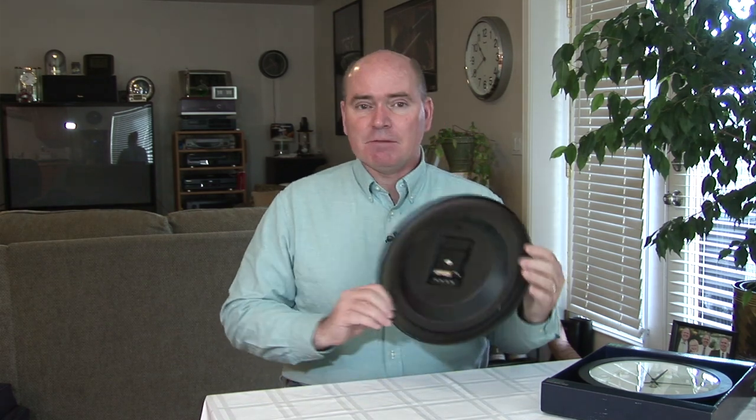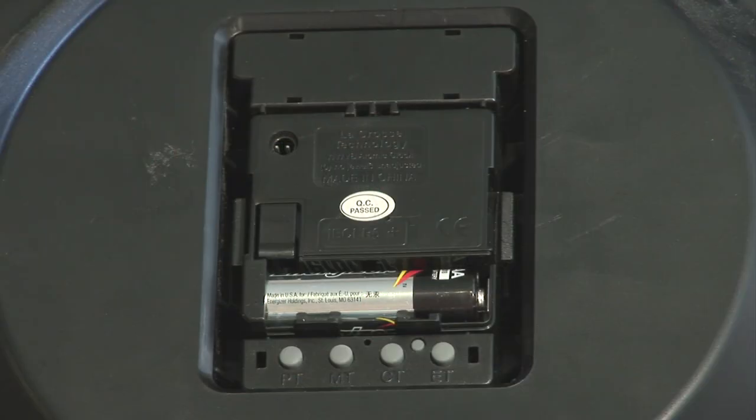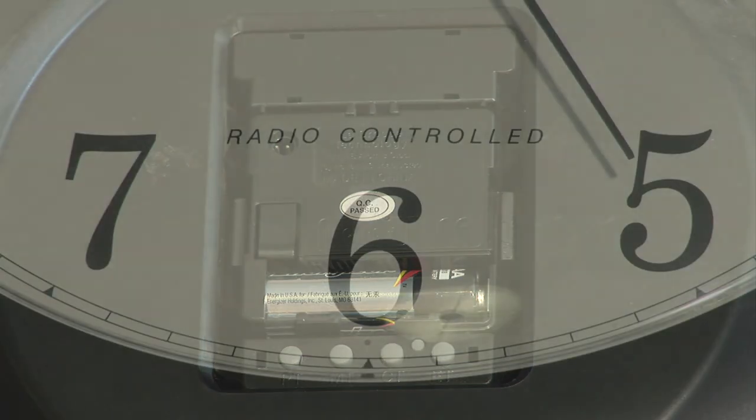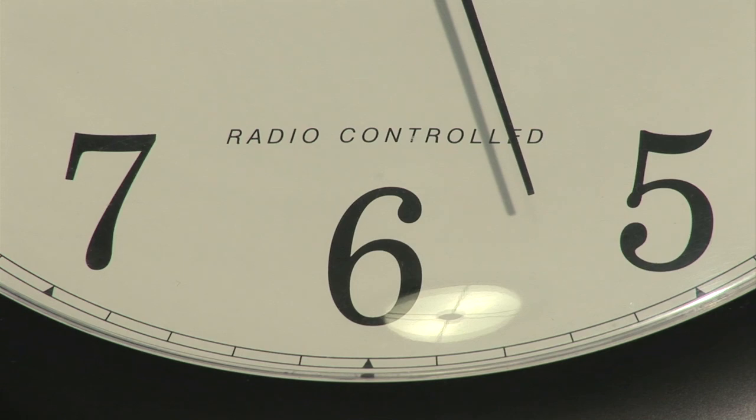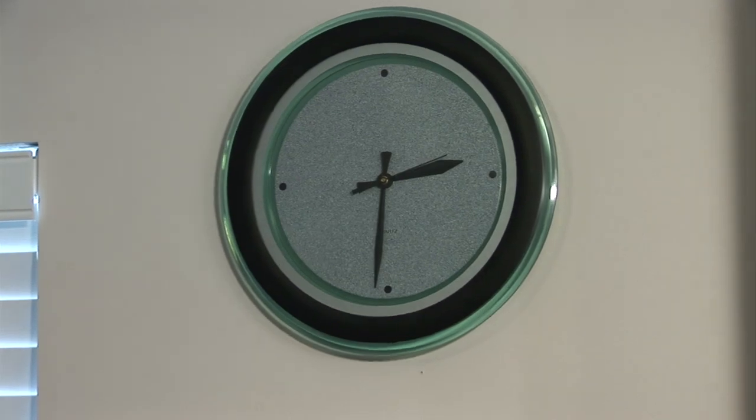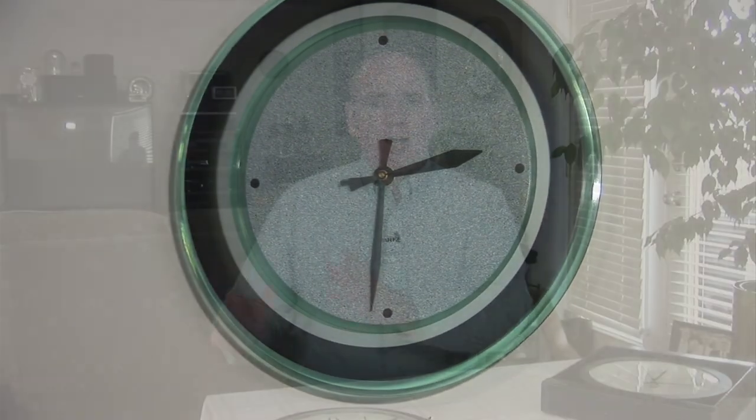Obviously you could buy a clock that already has the correct movement built-in that will receive time information from the atomic clock and set itself to the correct time. You can buy that already made just add batteries, or you could take a clock and convert it. Let's say you've got your favorite clock in the kitchen and you think if only that clock could be atomic or radio-controlled, I'd love to just keep that same clock. Well that's what I'm going to show you how to do.